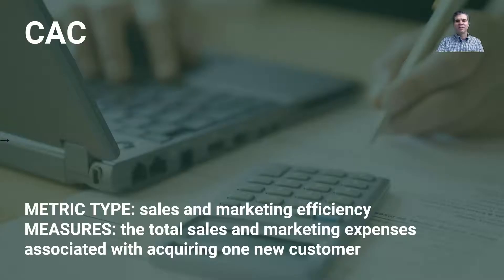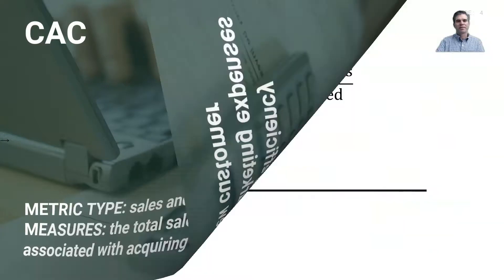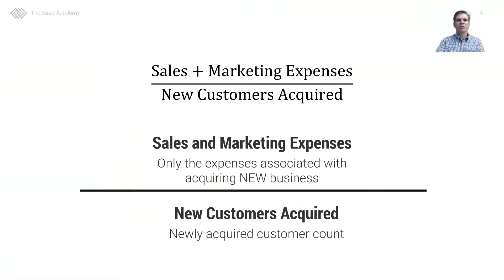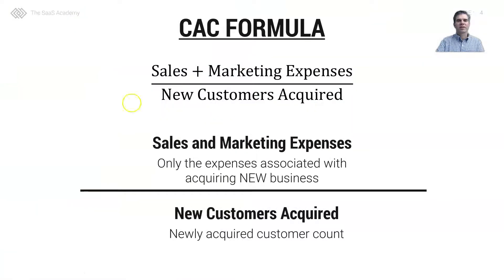CAC is a sales and marketing efficiency metric. It measures the total sales and marketing expenses associated with acquiring one new customer. To calculate CAC, it's simply our sales and marketing expenses divided by our new customers acquired.